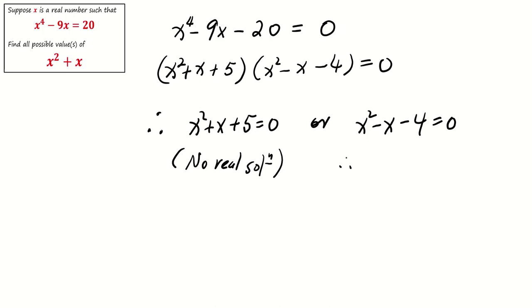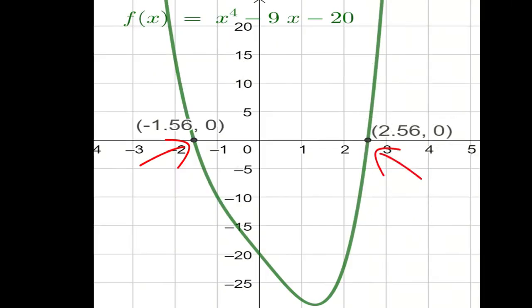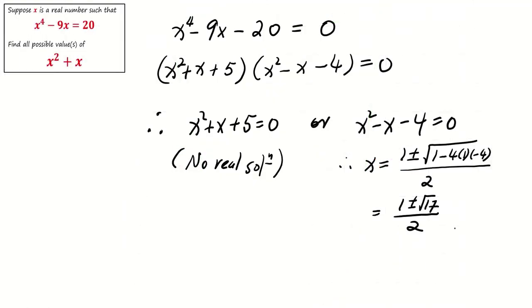Using the quadratic formula or any valid method, we find that x = (1 ± √17)/2. Therefore, the two values we observe from the graph are actually these two values. To find the value of x^2 + x,